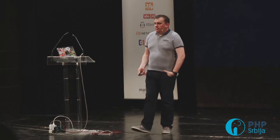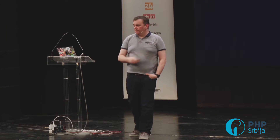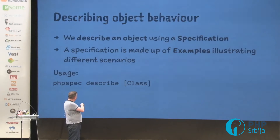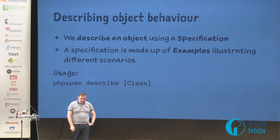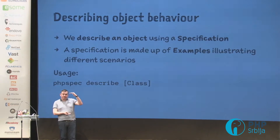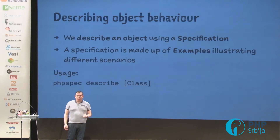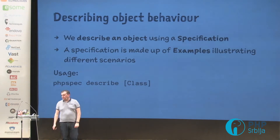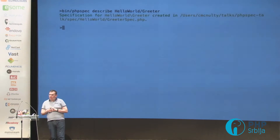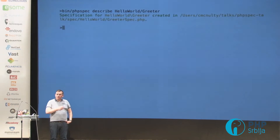Now I need to describe an object. I'm not writing a test — I'm going to write a description of what the object that fills this behavior is going to do. In PHPSpec we use the describe command, and that will generate a specification. A specification is a class; that class has methods and those methods are called examples. This is analogous to a test case and a test, but thinking of them as examples maybe helps you figure out what's the next example you're going to write.